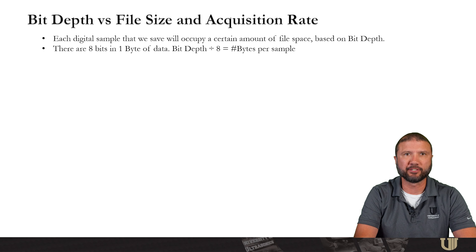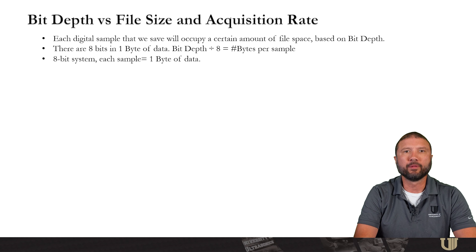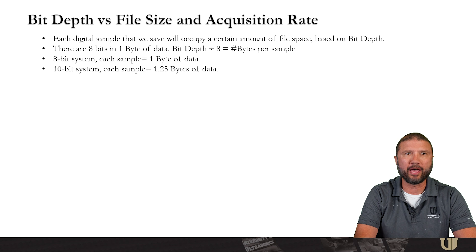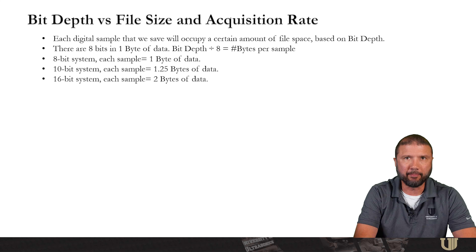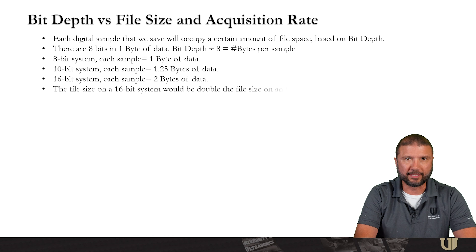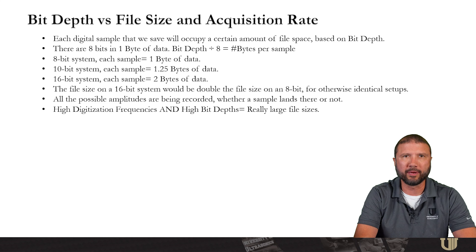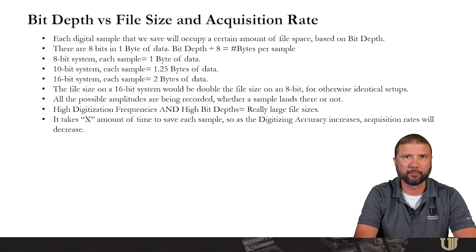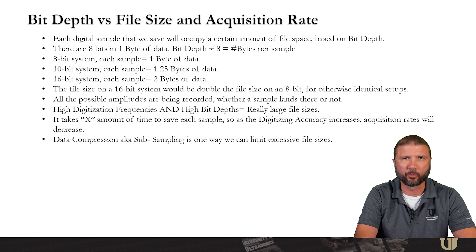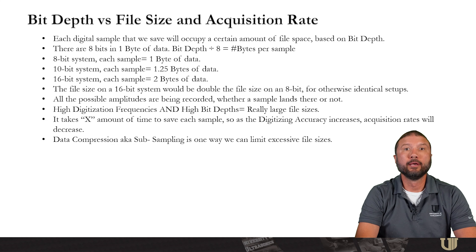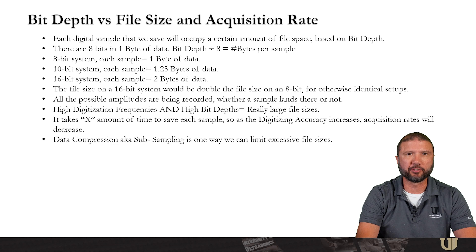Each digital sample we save will occupy a certain amount of file space, based on the bit depth. There are 8 bits in 1 byte of data. If you take your bit depth and divide it by 8, you'll figure out how many bytes per sample your file size will be. On an 8-bit system, each sample is 1 byte; on a 10-bit system, each sample is 1.25 bytes; on a 16-bit system, each sample is 2 bytes. The file size on a 16-bit system will be double the file size on an 8-bit for otherwise identical setups. If you couple a high digitization frequency with a really high bit depth, you'll get very large file sizes. It also takes time to save each sample, so as your digitizing accuracy increases, your acquisition rates will decrease.